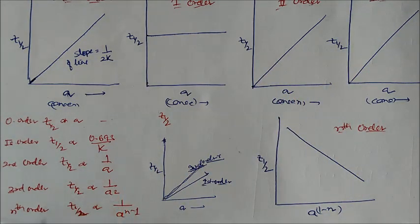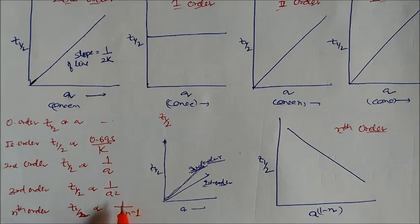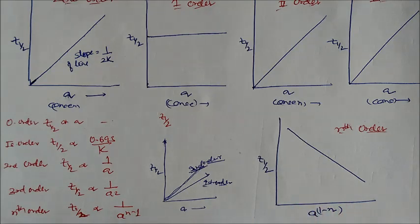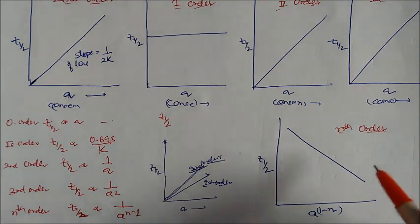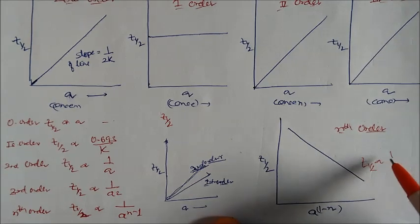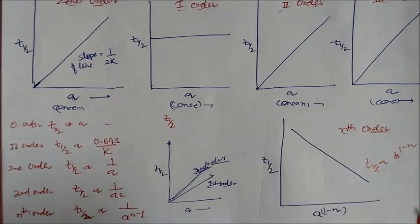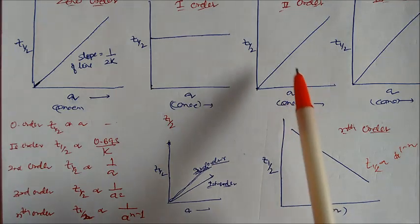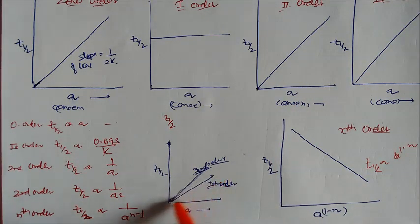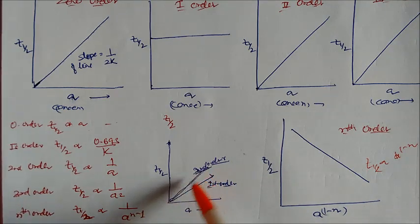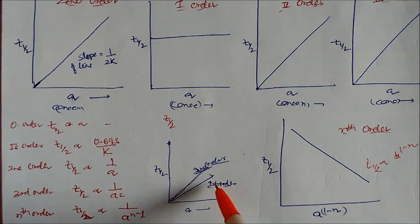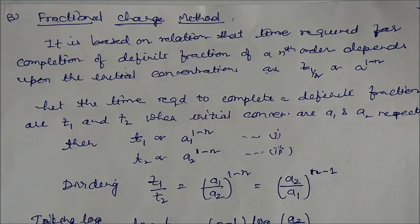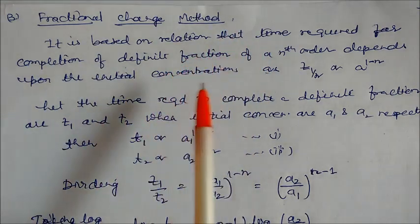For zero order, half-life is proportional to a. For first order, half-life is independent of concentration — graph is parallel. For second order, half-life is inversely proportional to concentration — graph slopes downward. For nth order, t-half is proportional to a to the power (1 minus n), so the graph goes downward. For second order the slope is higher, and for first order the slope is lower.